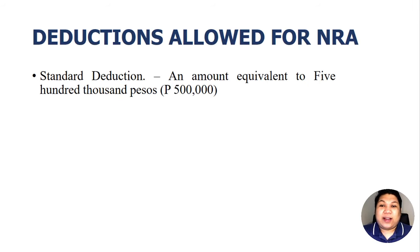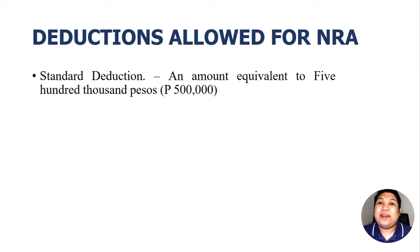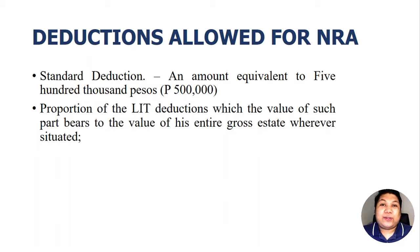There are deductions allowed for resident citizens, non-resident citizens, and resident aliens that are not allowed for non-resident aliens. Number one: standard deduction. The non-resident alien can only claim a standard deduction of five hundred thousand pesos, compared to the other three decedent types who can claim five million pesos. The NRA is also allowed to deduct a proportion of the LIT — losses, indebtedness, and taxes — based on the ratio that the value of their Philippine estate bears to their entire world gross estate. We will show later how to compute this proportion.